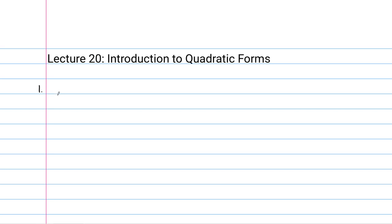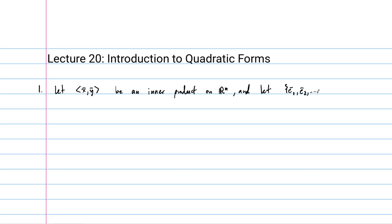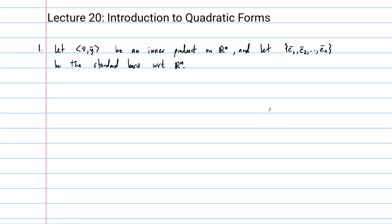I'm not going to go back through the definition of an inner product — if you need to review, please do so now. Let's let this angle bracket denote an inner product on R^n. The way this works is it takes in two vectors and returns a real number. Let's use the standard basis E1, E2, through En with respect to R^n.